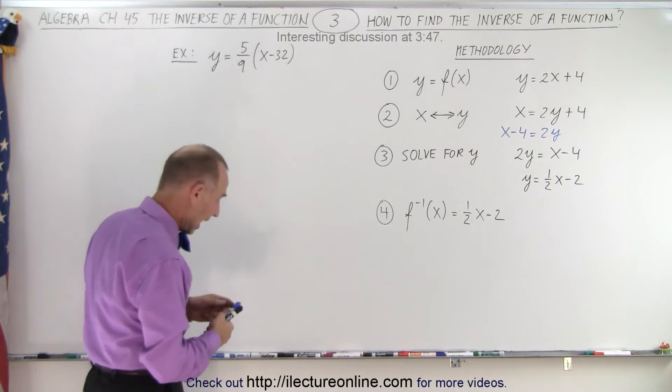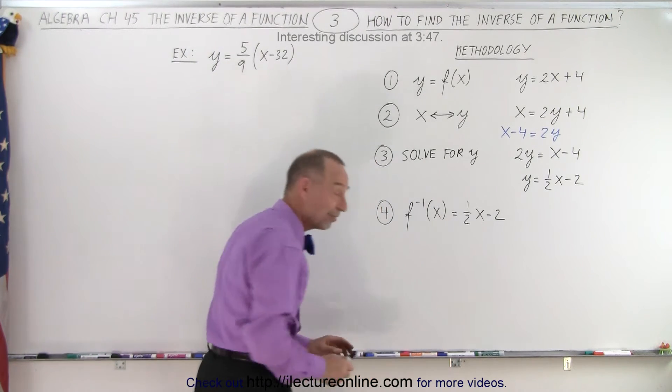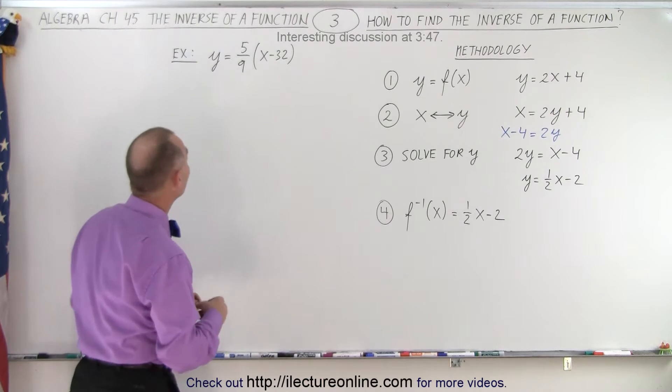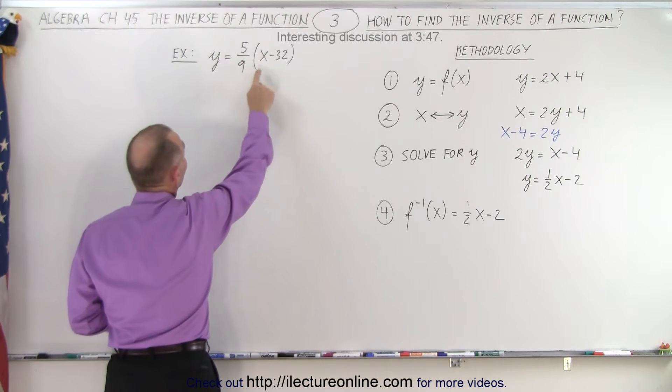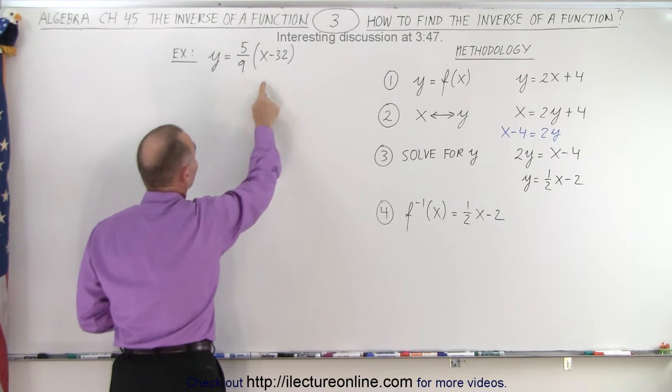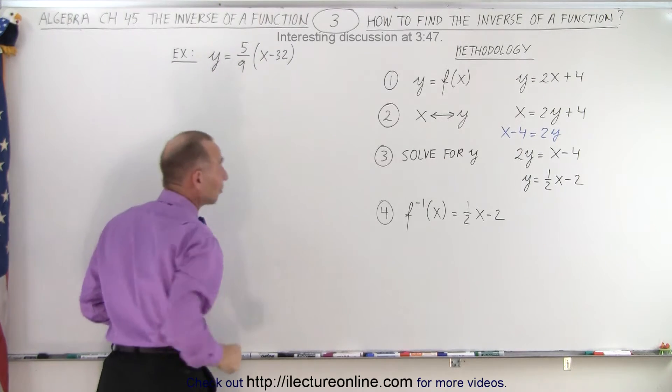So let's try our hand in this example right here. That's the example we had on the previous video. So we had y equals 5/9 x minus 32. That was converting Fahrenheit degrees to Celsius degrees.